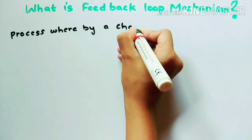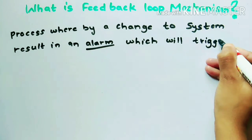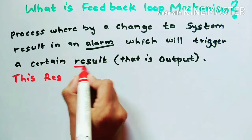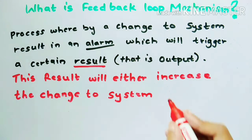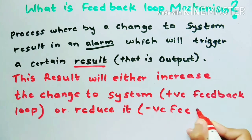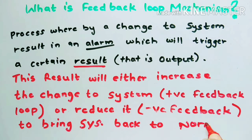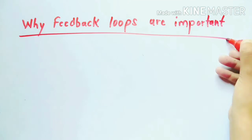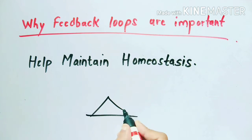The regulator, that is the brain, can control the process. Feedback loop mechanisms are therefore the process whereby a change to a system results in an alarm which triggers a certain output. This result will either increase the change to the system — that is positive feedback — or will reduce it to bring the system back to normal — that is negative feedback. Feedback loops are important as they help living organisms to maintain homeostasis.